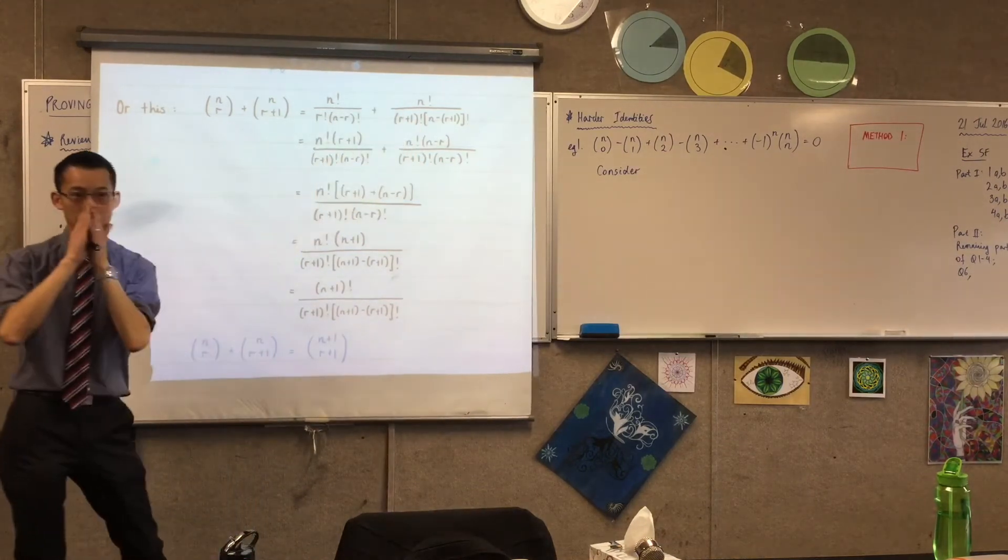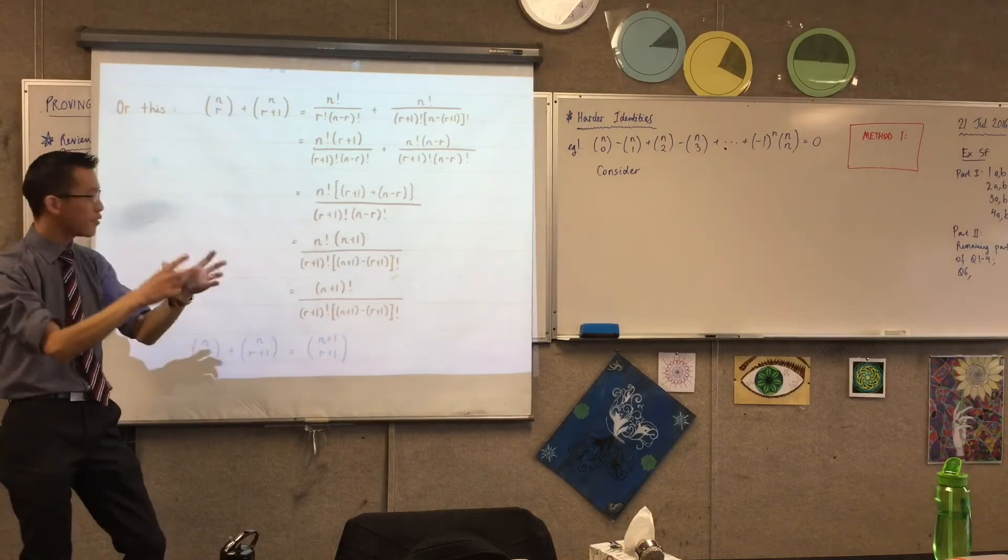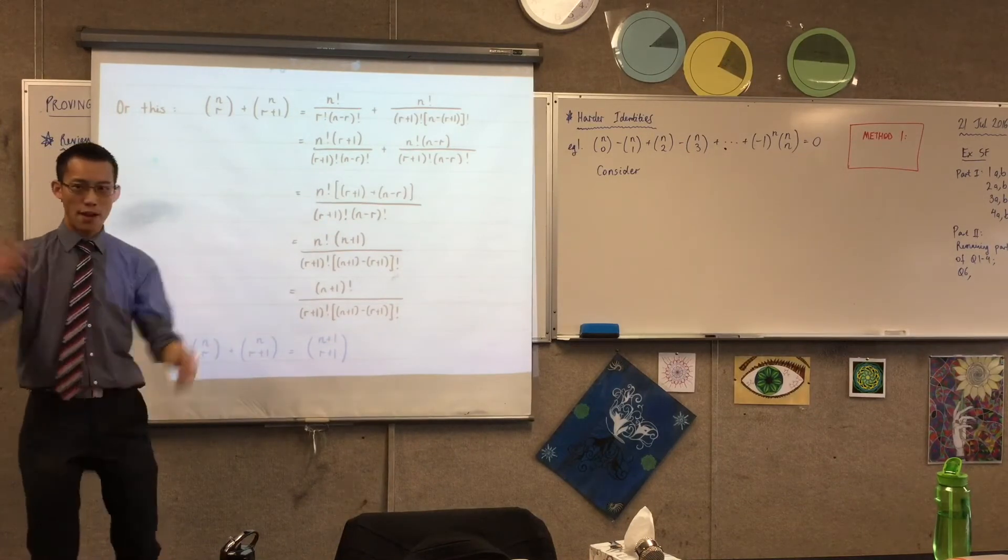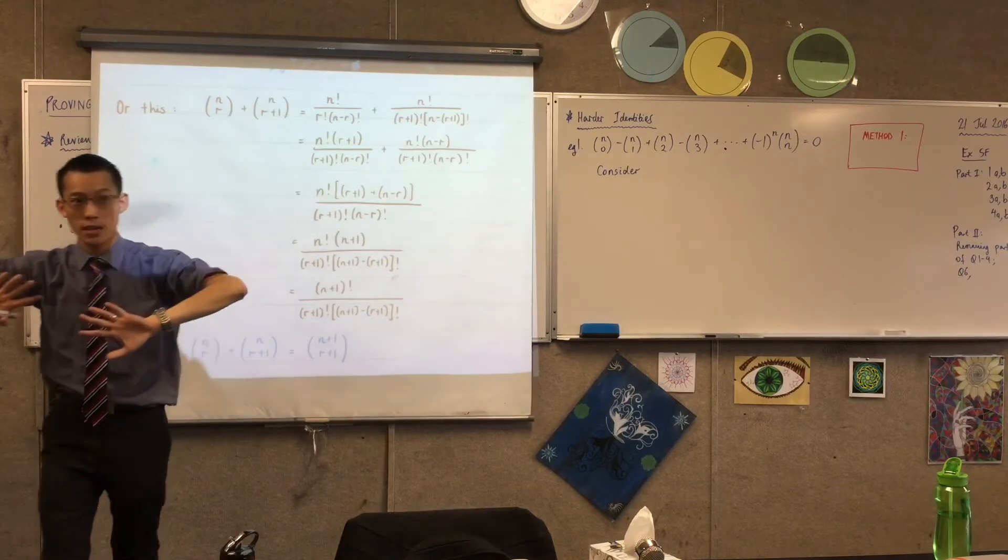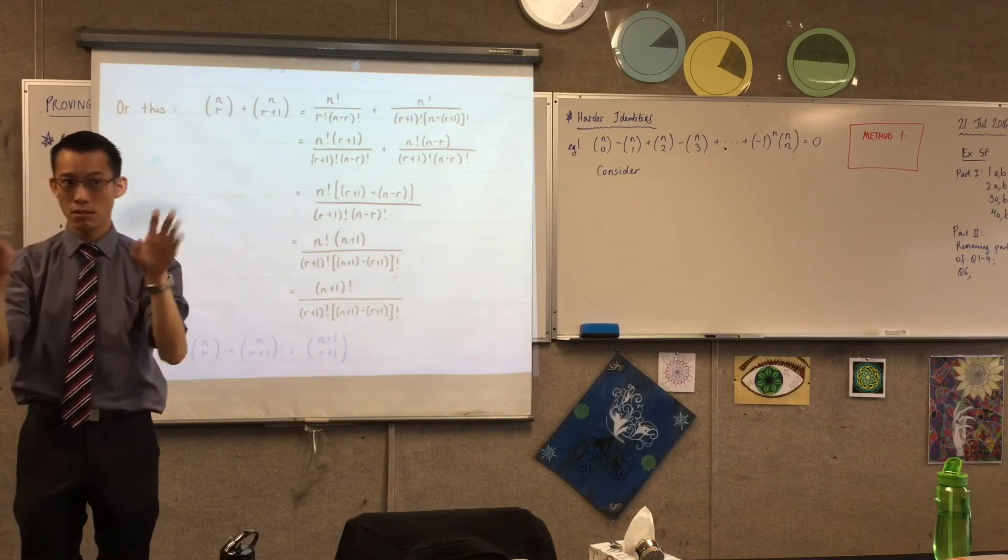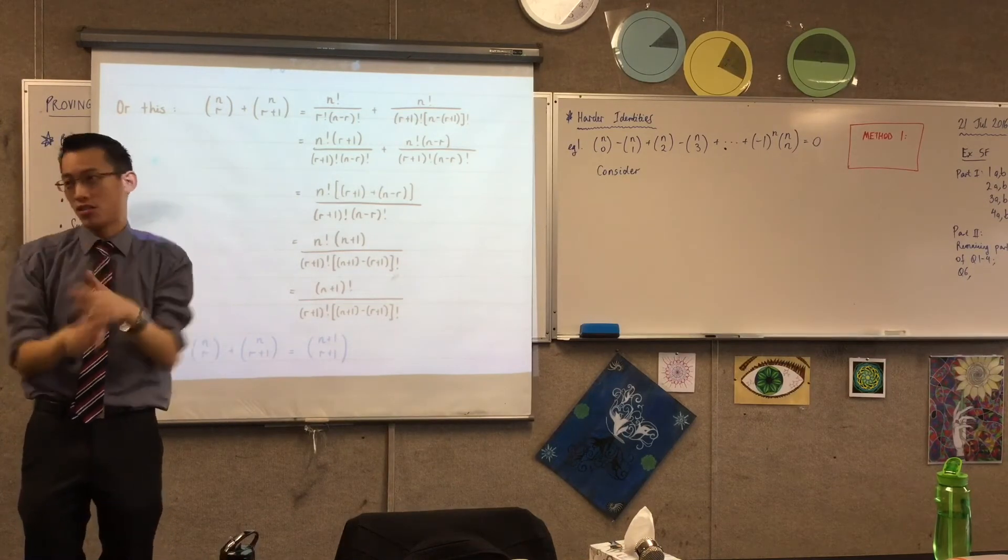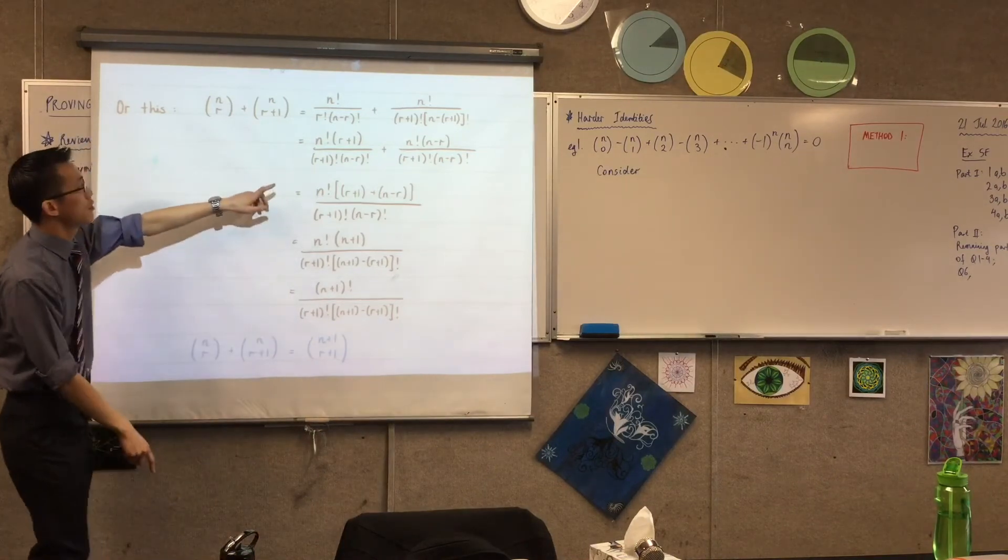And then I thought, okay, I know where I'm headed. It's a bit of a messy fraction, but at least it's one fraction. So if I'm getting two fractions into one, then my first task obviously is common denominator, right? Just like with any other fractions. So you can see what I'm trying to do here.